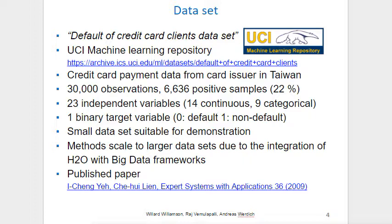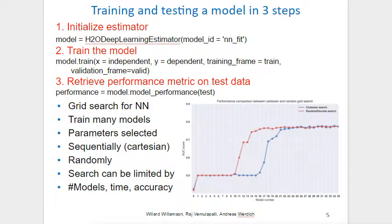There is also a published paper on the dataset. Training and testing an H2O model is described in three simple steps: initialize an estimator, train the model, and retrieve the model performance metric on the test data. It is also possible to perform more extensive grid searches by training many more models, where the parameters are selected sequentially or randomly.